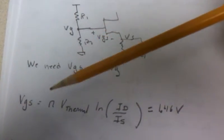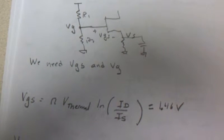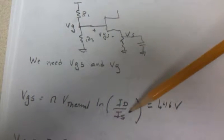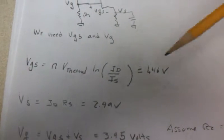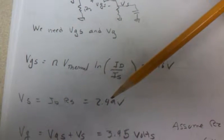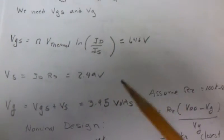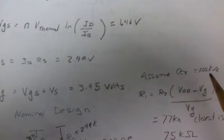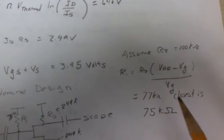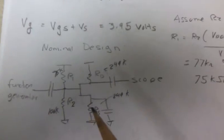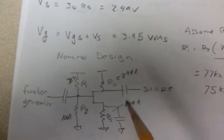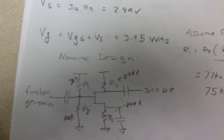Now we need to size R1 and R2. VGS equals the ideality factor times the thermal voltage times the log of the drain current divided by IS. I get about 1.46 volts. VS equals 2.49 volts. VG is the sum of these. If I assume R2 equals 1 kilohm I can solve for R1, 75K, and there's the final design.